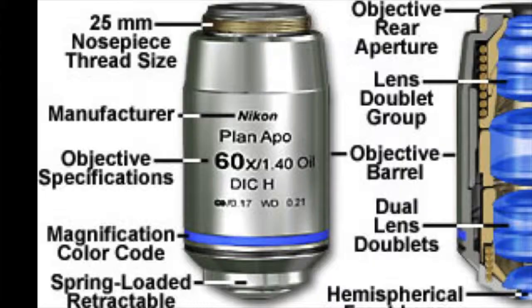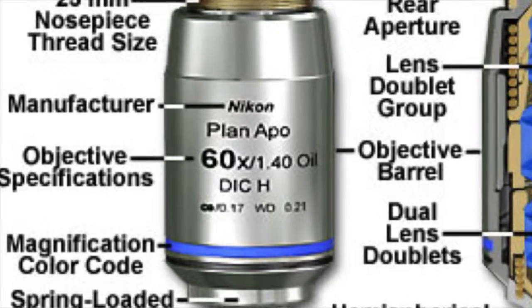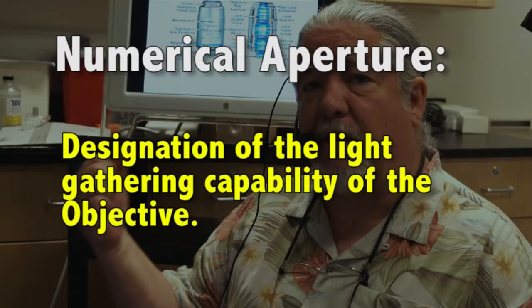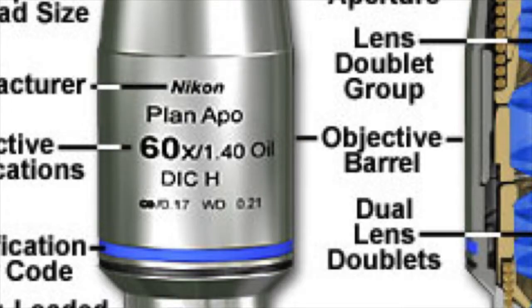Here we have a 60x objective, and then it has a slash, and next to the slash it has the number 1.40. That number 1.40 is called the numerical aperture of the lens or the objective. Numerical aperture is a designation of the light-gathering capability, or the strength of the objective in producing a very well-lit, high-resolution image.